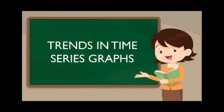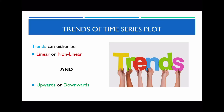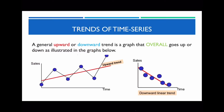The next component of today's lesson is looking at trends in time series graphs. Trends can either be linear or non-linear, and they could either be upwards or downwards. We need to address both of these aspects when identifying trends in a time series plot. Upward and downward means all the dots will either increase or substantially decrease over time. This is what we refer to as a downward trend, whereas in an upward trend, most of the data points are gradually increasing every single time.